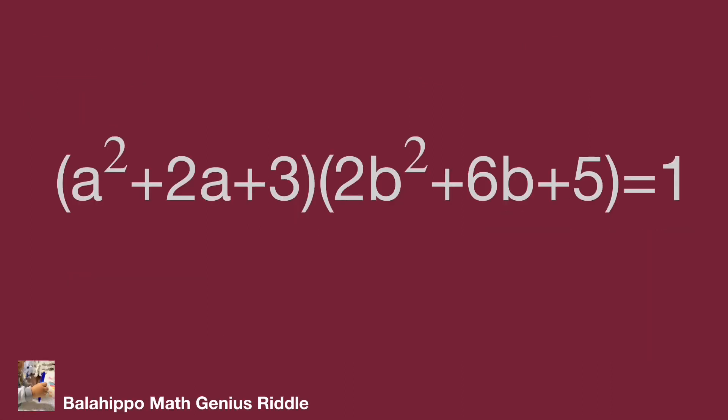The given equation is (a² + 2a + 3) multiply (2b² + 6b + 5) equal to 1. Find the value of a and b. There are two unknowns, a and b, and both of them with square terms. How can we solve this question?